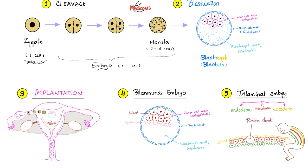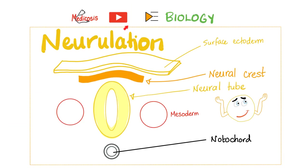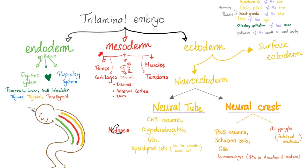You have Endoderm, Mesoderm, and Ectoderm, as clearly demonstrated in my Neurulation video in my Biology Playlist. What does the Endoderm do? It gives rise to the epithelium — or endothelium to be specific — of your digestive system and respiratory system, and some cardiac structures. With the digestive system also comes the pancreas, liver, gallbladder, and three glands: Thymus, Thyroid, and Parathyroid.